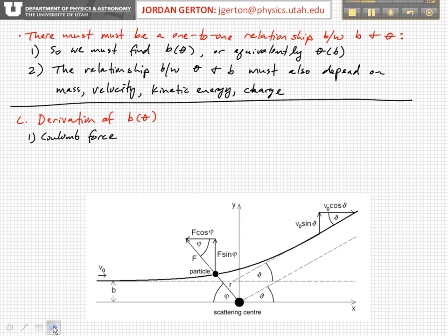So first we need to derive the impact parameter B as a function of theta. And the first consideration is the Coulomb force. As we discussed, the Coulomb force is the only force acting between the alpha particle and the scattering center, the nucleus, the gold nucleus.